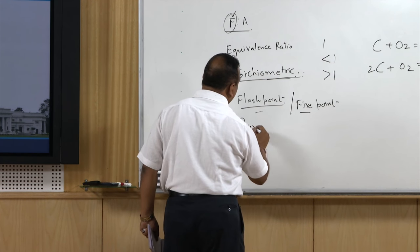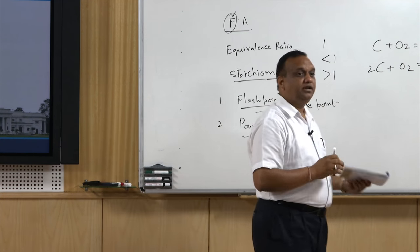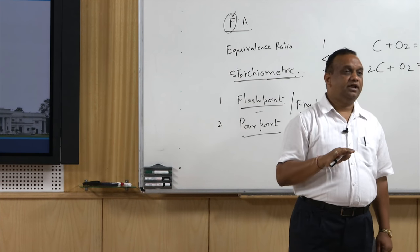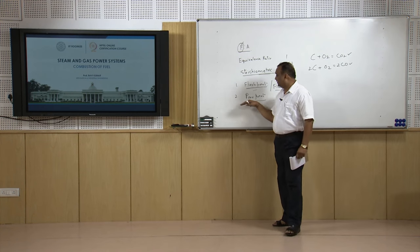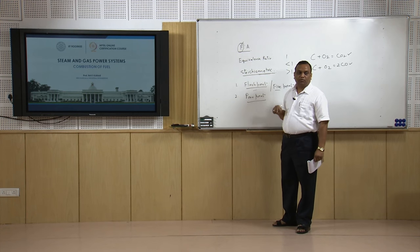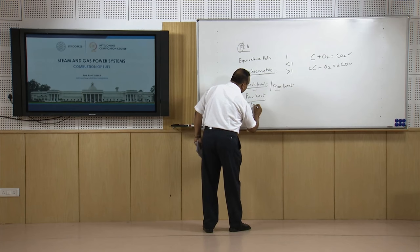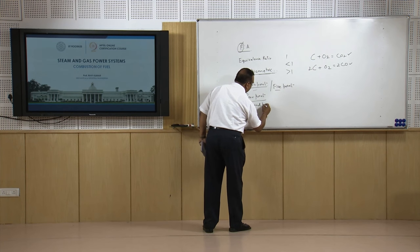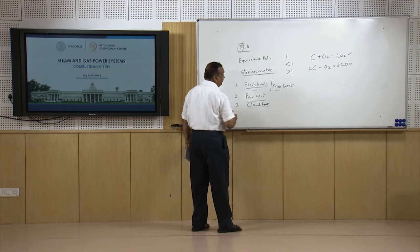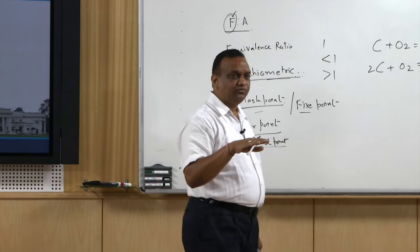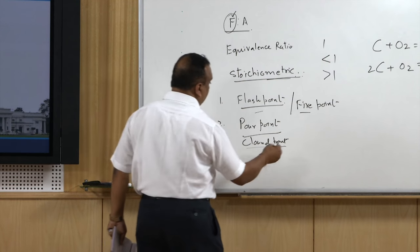The second characteristic is pour point. These are all physical characteristics of the fuel. Pour point is the minimum temperature at which the liquid fuel is flowable. There is another term called cloud point — the temperature at which solidification of wax present in the fuel takes place, causing the surface to become whitish.